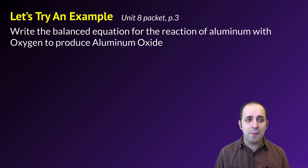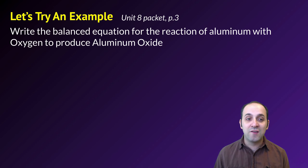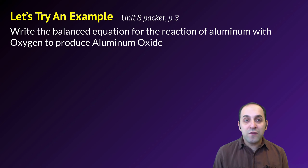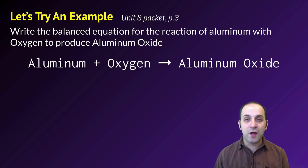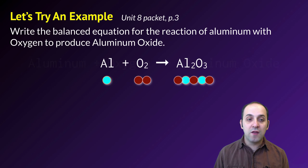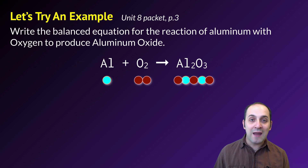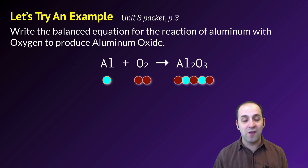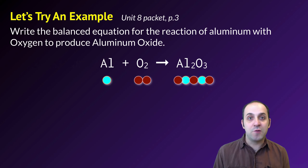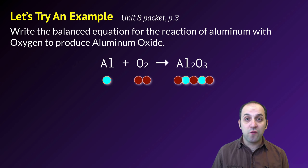Let's try an example on page 3 of your unit 8 packet. Write the balanced equation for the reaction of aluminum with oxygen to produce aluminum oxide. Pause and try it on your own first. The reaction is aluminum plus oxygen yielding aluminum oxide. Aluminum is Al, oxygen is O₂, and aluminum oxide has the formula Al₂O₃. Oxygen is one of those diatomic elements, so it travels in pairs — that's going to affect the balancing.